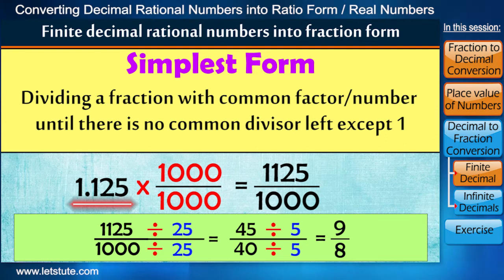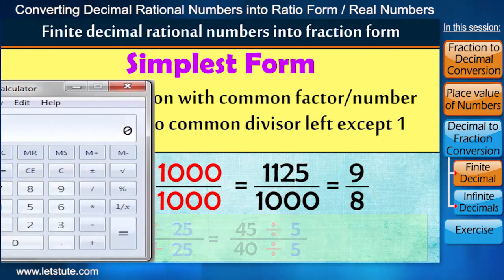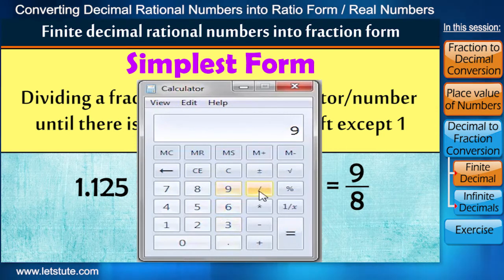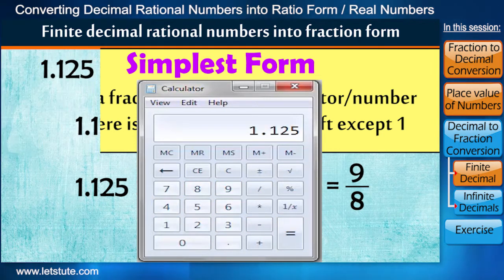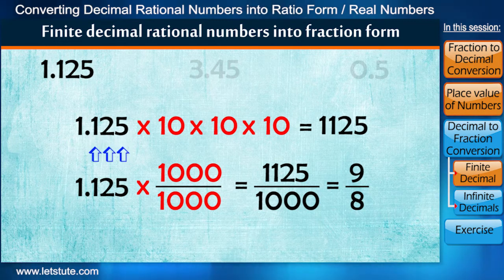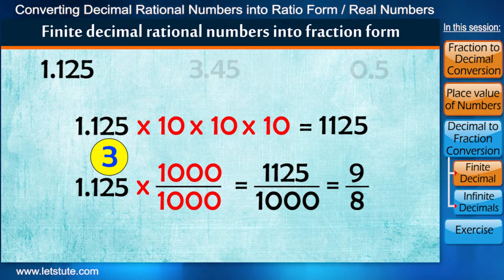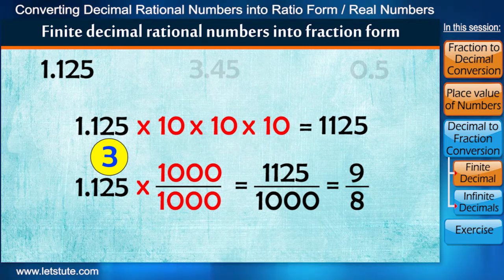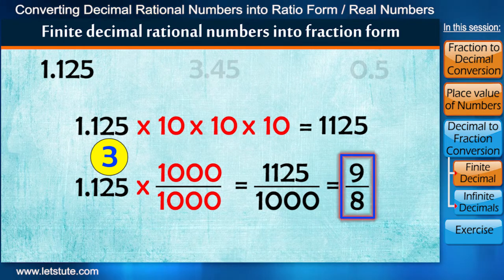So 1.125 can be rewritten as the fraction 9 upon 8. Let me also tell you all a simple trick. To write 1.125 in fraction form, we'll just count the number of digits after decimal. Here we have three digits, so we'll multiply and divide by three tens, that is by 1000, and can write it in simplest form if possible.